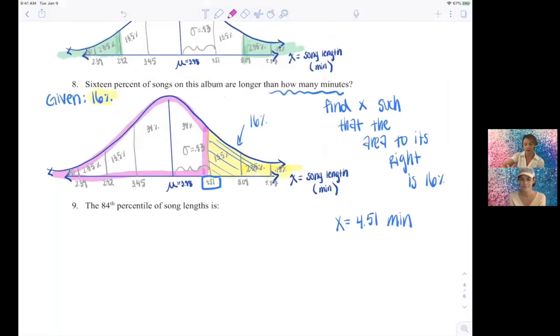Then we also simultaneously are marking off 100 minus 16 percent, 84 to our left, right. And percentile means that's what's below you or left of you, so it's still the same answer, 4.51 minutes. It's kind of two ways to obtain the same x-value or describe it.